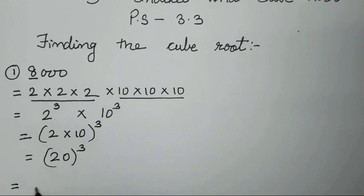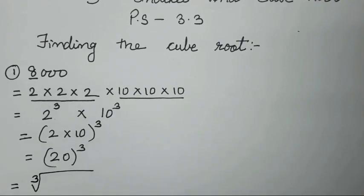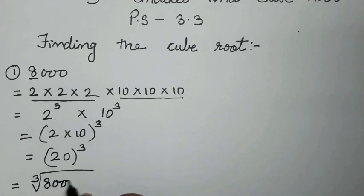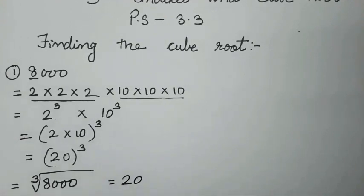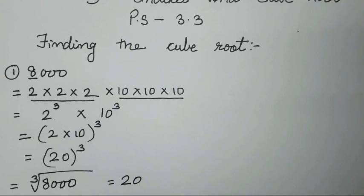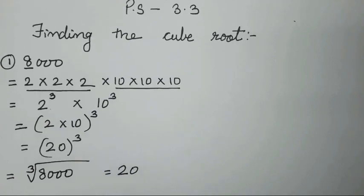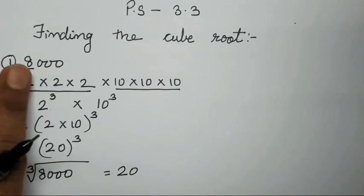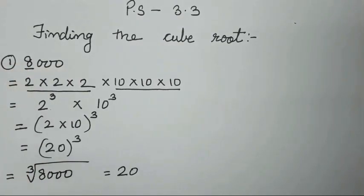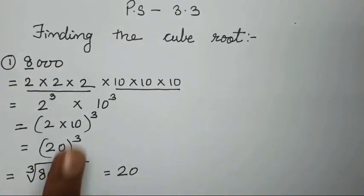In the cube root form, you write the radical sign with 3 and 8000 underneath. The answer is 20. This is one method you can follow if your number ends in zeros. This is the first method to use for finding the cube root.